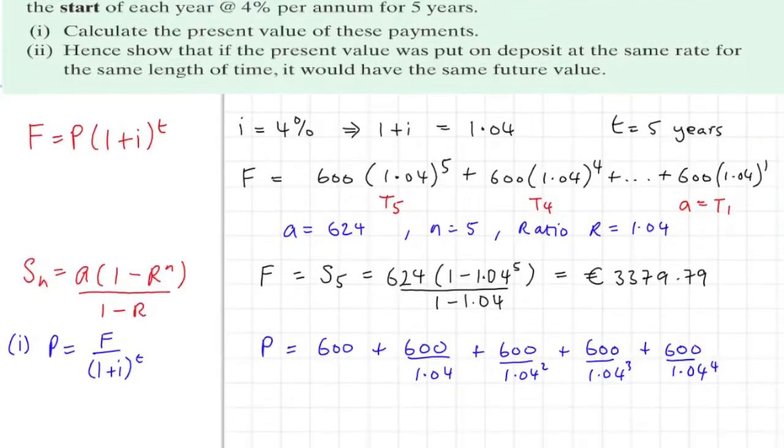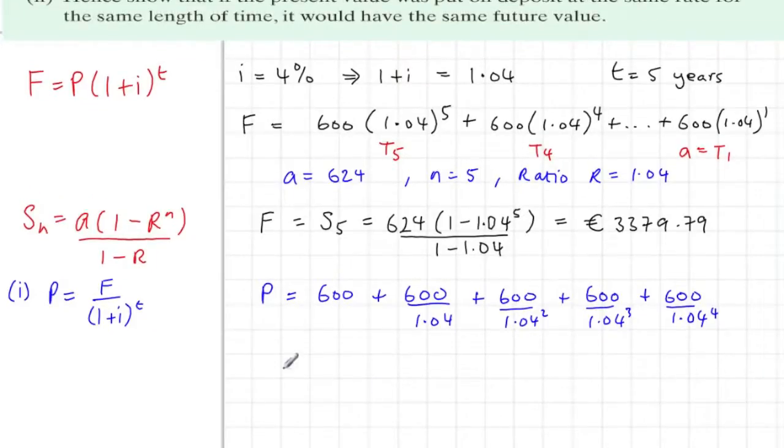Right down to the last payment will have had 4 years of earning interest, so it'll be a little less than 600 because it'll have been sitting in the bank for 4 years. And so we sum this series. Write down the geometric sum formula.